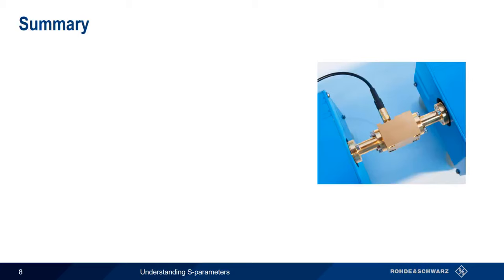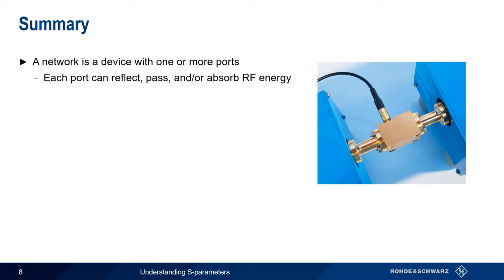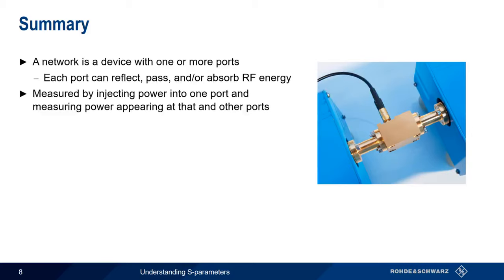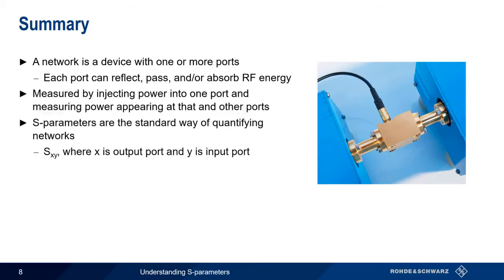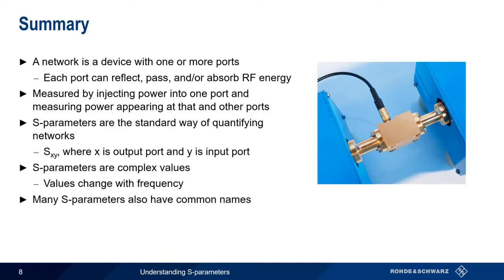Let's end with a quick summary of what we've learned. A network is a device with one or more ports, and each of these ports can reflect, pass, or absorb radio frequency energy. We measure networks by injecting power into one of these ports, and simultaneously measuring the power that appears at that port and at the other ports. The standard way of representing these measurements uses something called S-parameters, which are given in the form of S sub XY, where X is the output port and Y is the input port. Keep in mind that S-parameters are complex values, which typically change over frequency. Although the use of S-parameters is very widespread in the industry, many one- and two-port S-parameters also have more common names, like gain or return loss. And finally, it should come as no surprise that the instrument most commonly used to measure S-parameters and analyze networks is called a network analyzer. This concludes our presentation on understanding S-parameters. Thanks for watching.